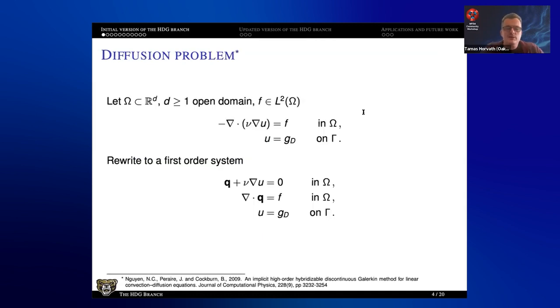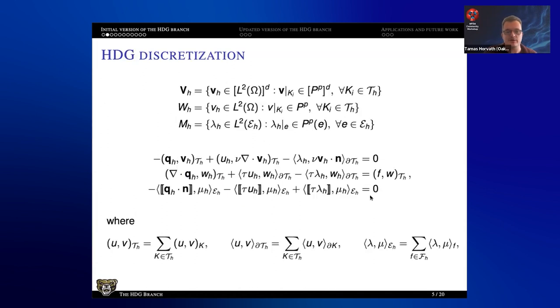So initially, we added two examples and a new bilinear form and a couple of integrators. The two examples we added were diffusion problem and an advection reaction problem. So the diffusion problem is based on this paper down in the footnote. You start with a simple Laplacian, basically. You rewrite it to a first-order system, and you derive a weak form, multiply the first equation with a vector-valued test function, the second with a scalar-valued test function, and do some integration by parts.